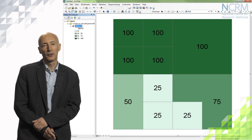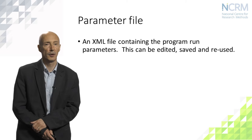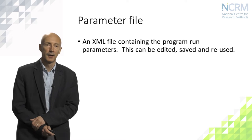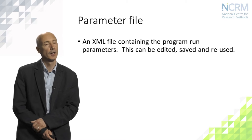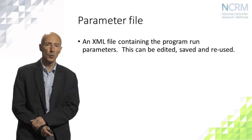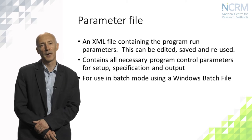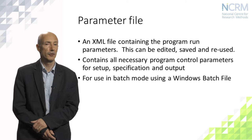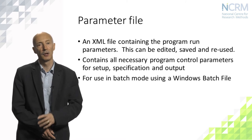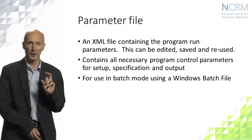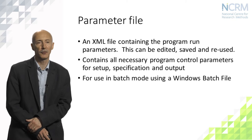The second important input to AZTool is the parameter file. All of the program control is exercised through this XML file which contains all the program parameters. The advantage of working this way is that it allows us to exactly save the syntax used for a particular run, edit it and reuse it. Because the XML file contains all the necessary program control parameters including file locations, it's quite effective for running the program in batch mode — using a Windows batch file to set up multiple runs with small variations, such as moving to another region or trying a different target population size.